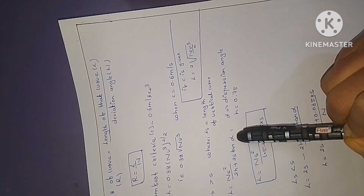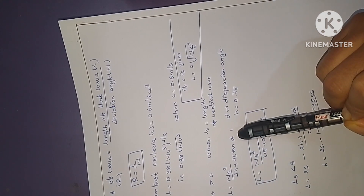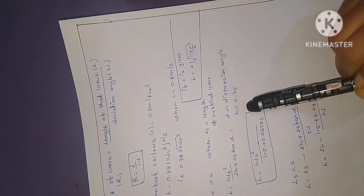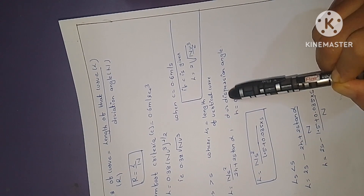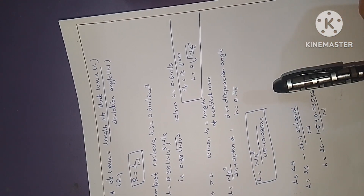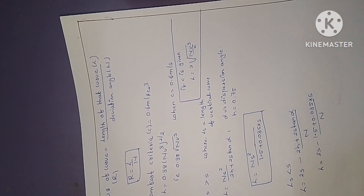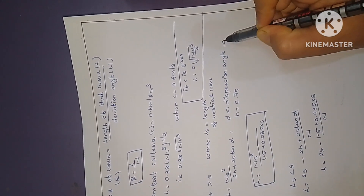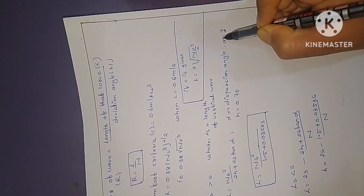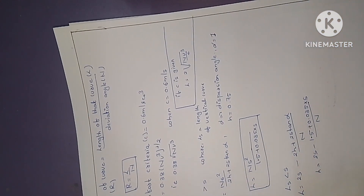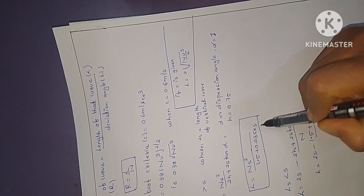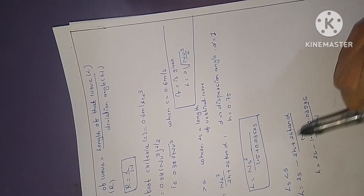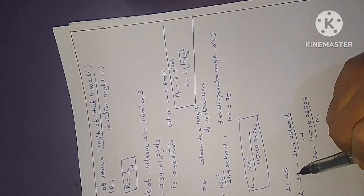The formula also involves alpha, the dispersion angle, with a value of 0.75 m per second used in one condition and alpha equals 1 in another. These are the key parameters for finding the length of the valley curve.